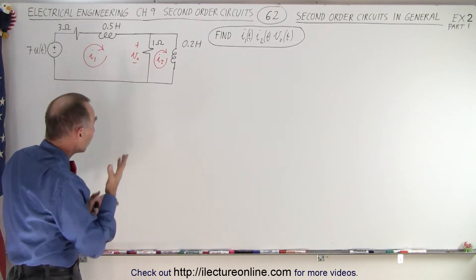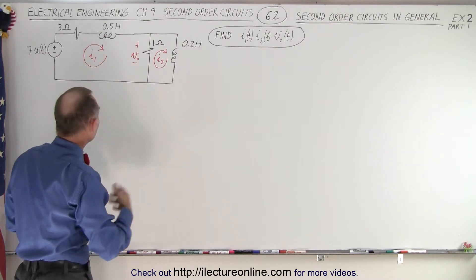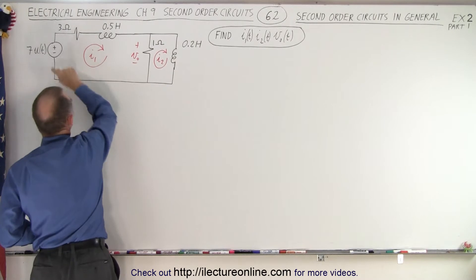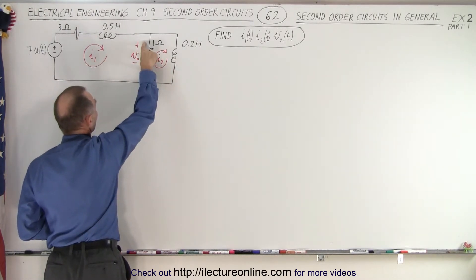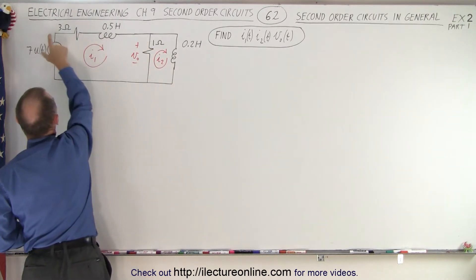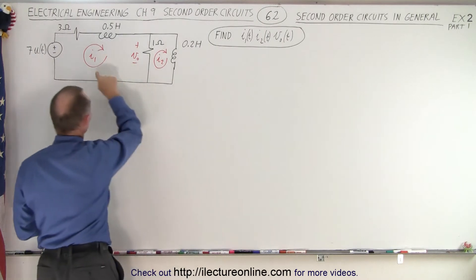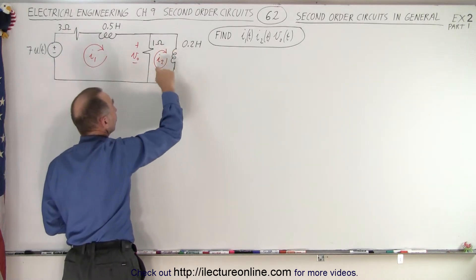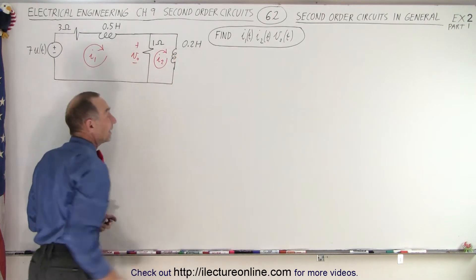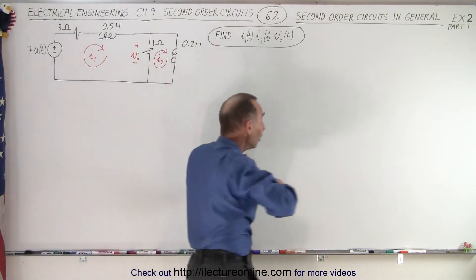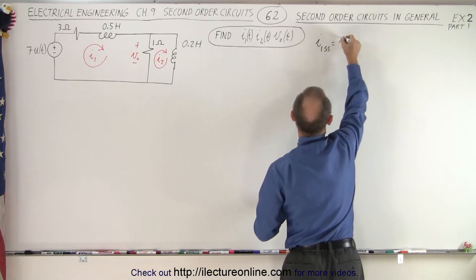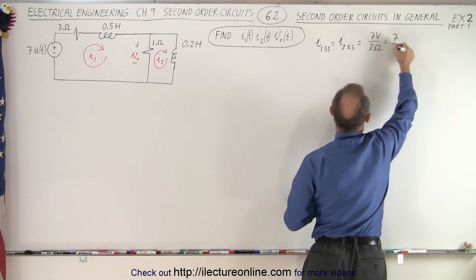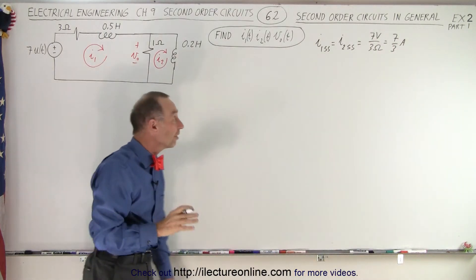Next, what would the values be at final steady state? At final steady state, the inductors are like short circuits, so all the current will flow through the outside loop — it will not flow through this resistor. So the current will be the voltage applied divided by this resistor. Both I1 and I2 at steady state equal 7 volts divided by 3 ohms, which is 7/3 amps.